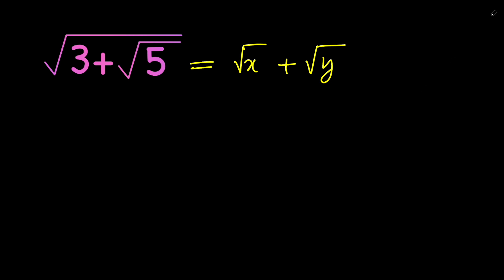In order to solve this for x and y, let's go ahead and square both sides. So if you do that, we're going to get 3 plus root 5 on the left-hand side, and x plus y plus 2 times the square root of x times y on the right-hand side.